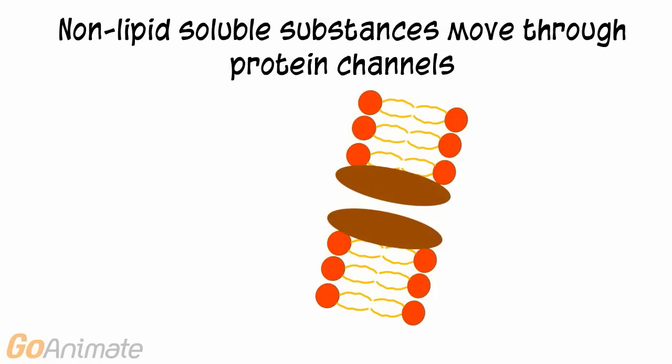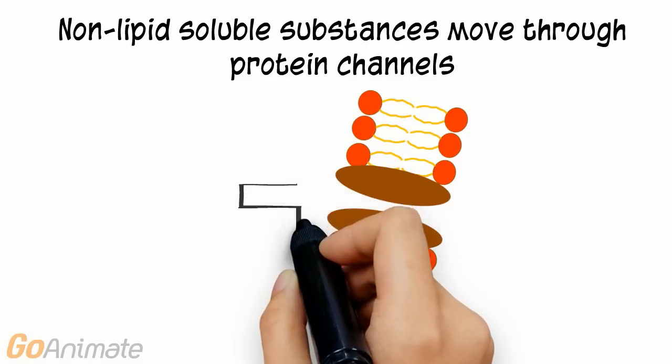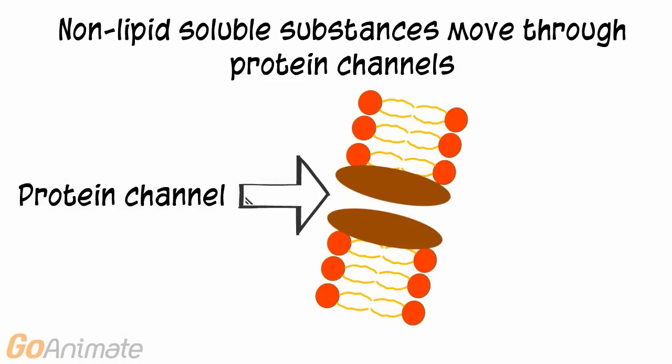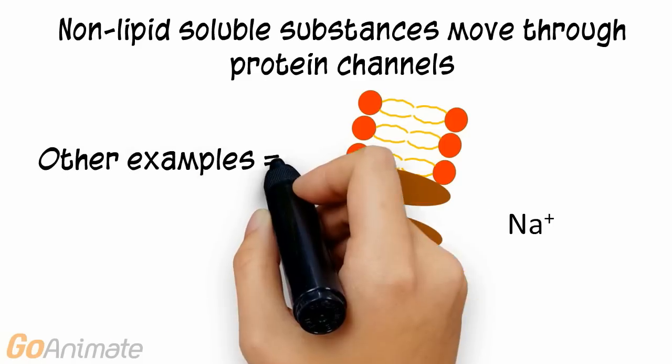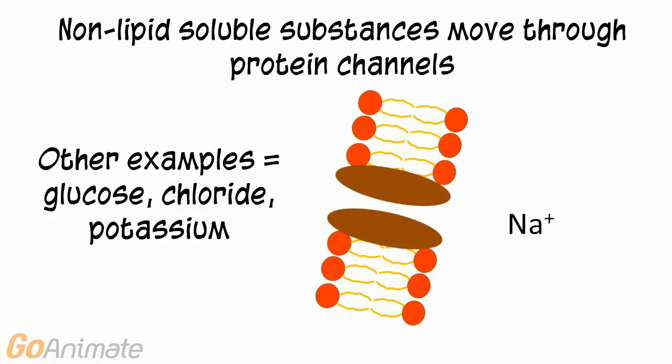Non-lipid-soluble substances cannot pass through the membrane, so they need a special doorway called a protein channel. In this example, sodium moves into a cell through a protein channel. Other examples of substances that move through protein channels include glucose, chloride, and potassium.